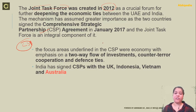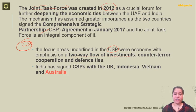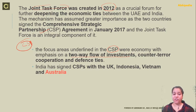Focus areas which the CSP underlined include an economy with emphasis on two-way flow of investment, counter-terror cooperation and defence ties. India has also signed CSP agreements with other countries such as the UK, Indonesia, Vietnam and Australia — four more countries with which India has signed CSP.